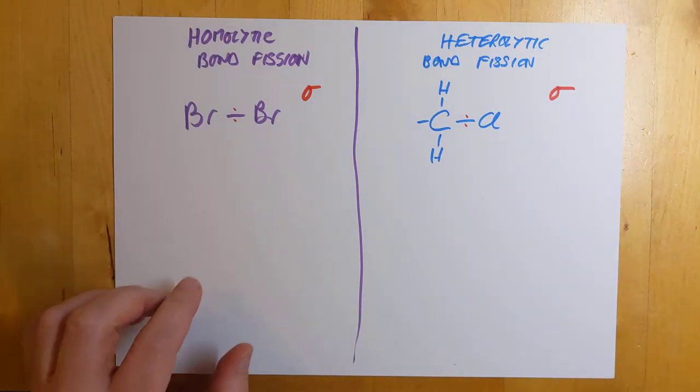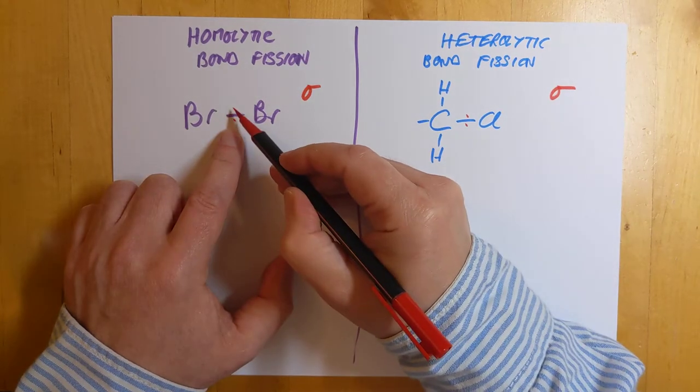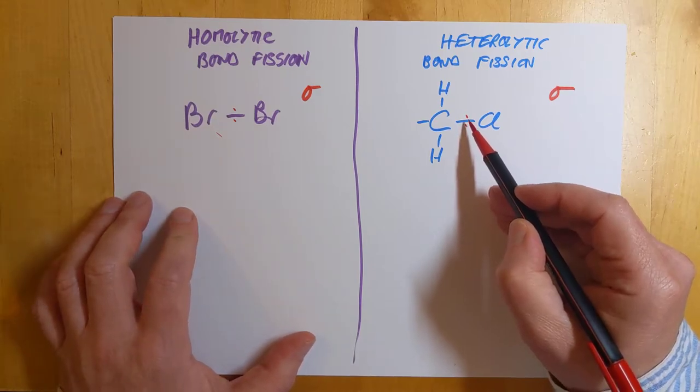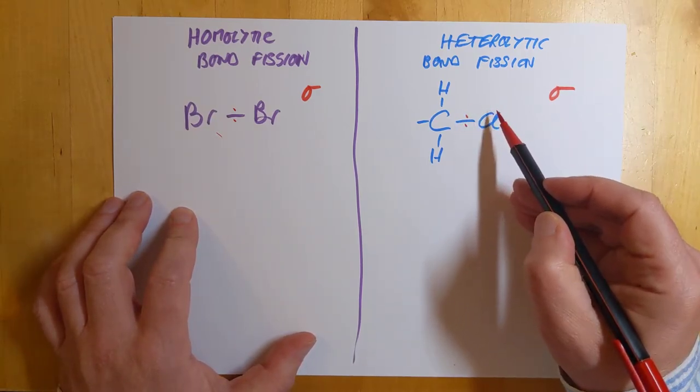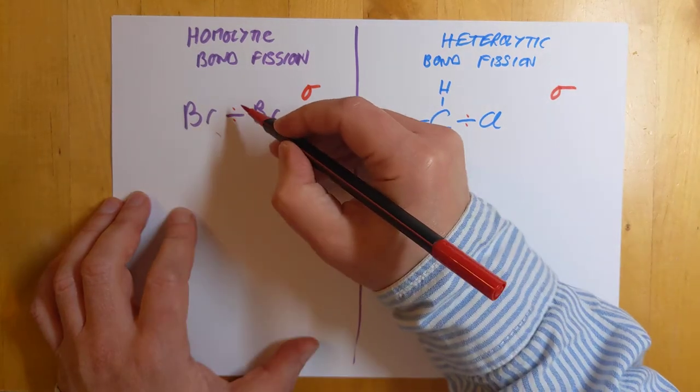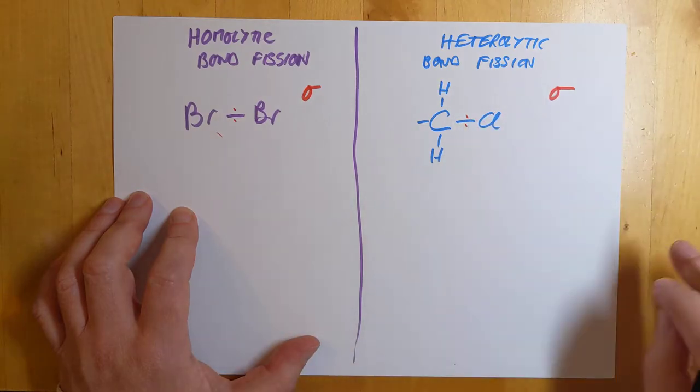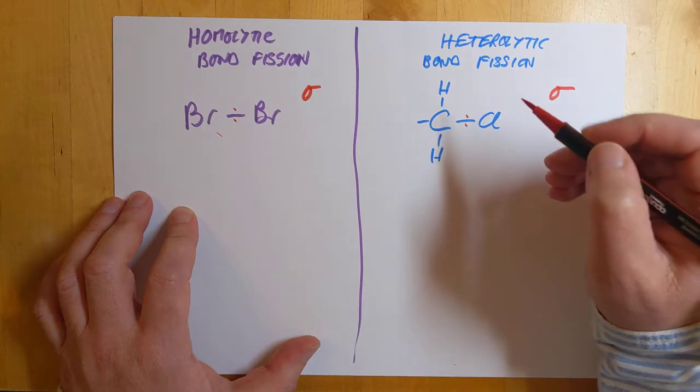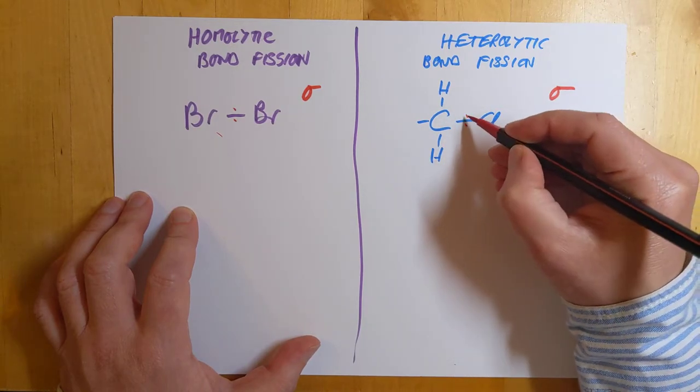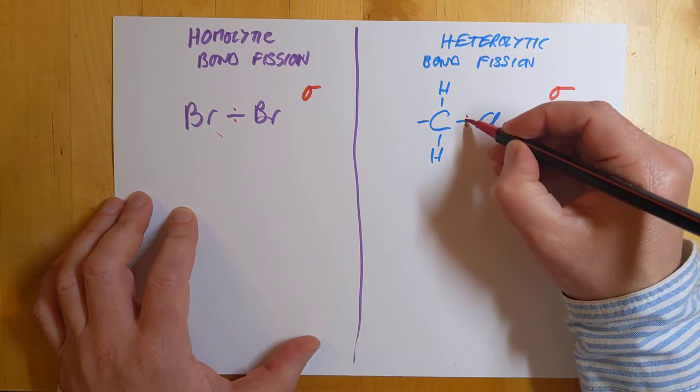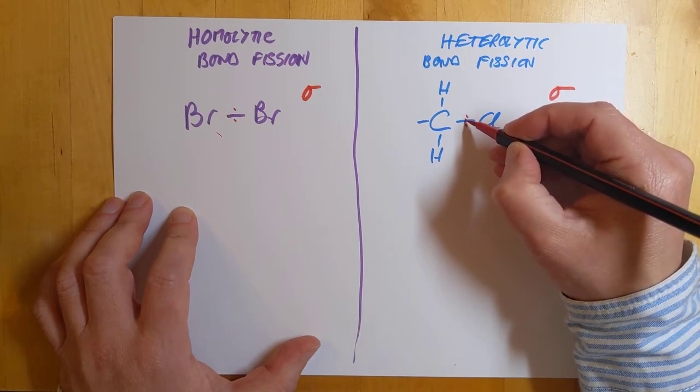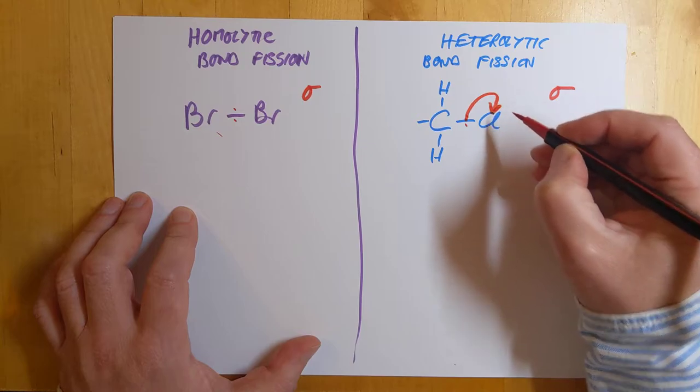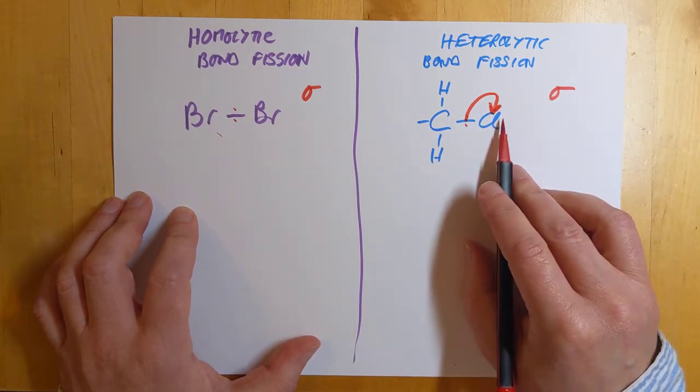Homolytic bond fission, what we're going to do is we're going to break this bond so that one electron ends up on this atom, one electron ends up on this atom. This bond is going to be broken in a more conventional sense. Both electrons are going to go plop onto this atom. Let me show you how we depict that. Let's do this one first because this is possibly slightly easier to go with.